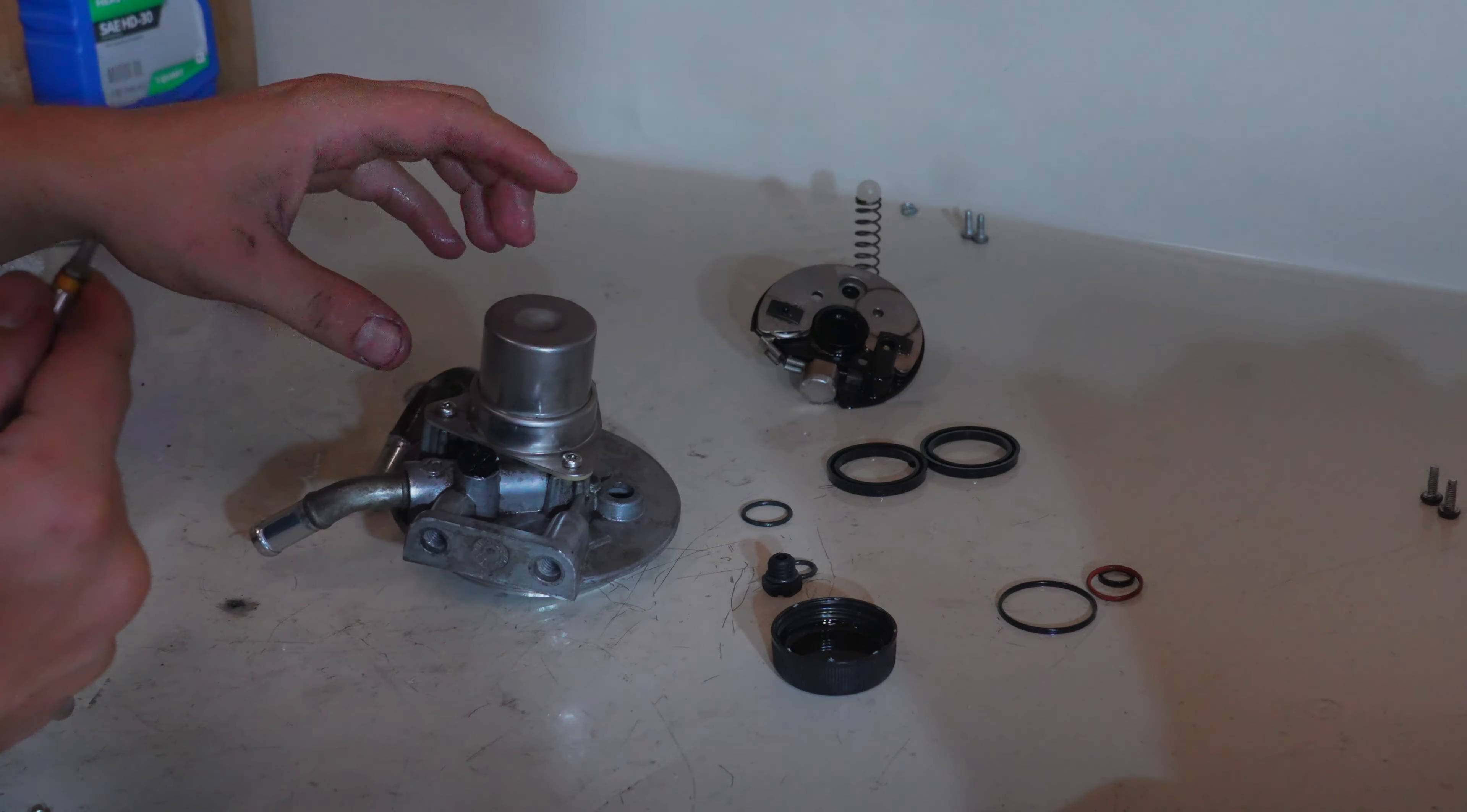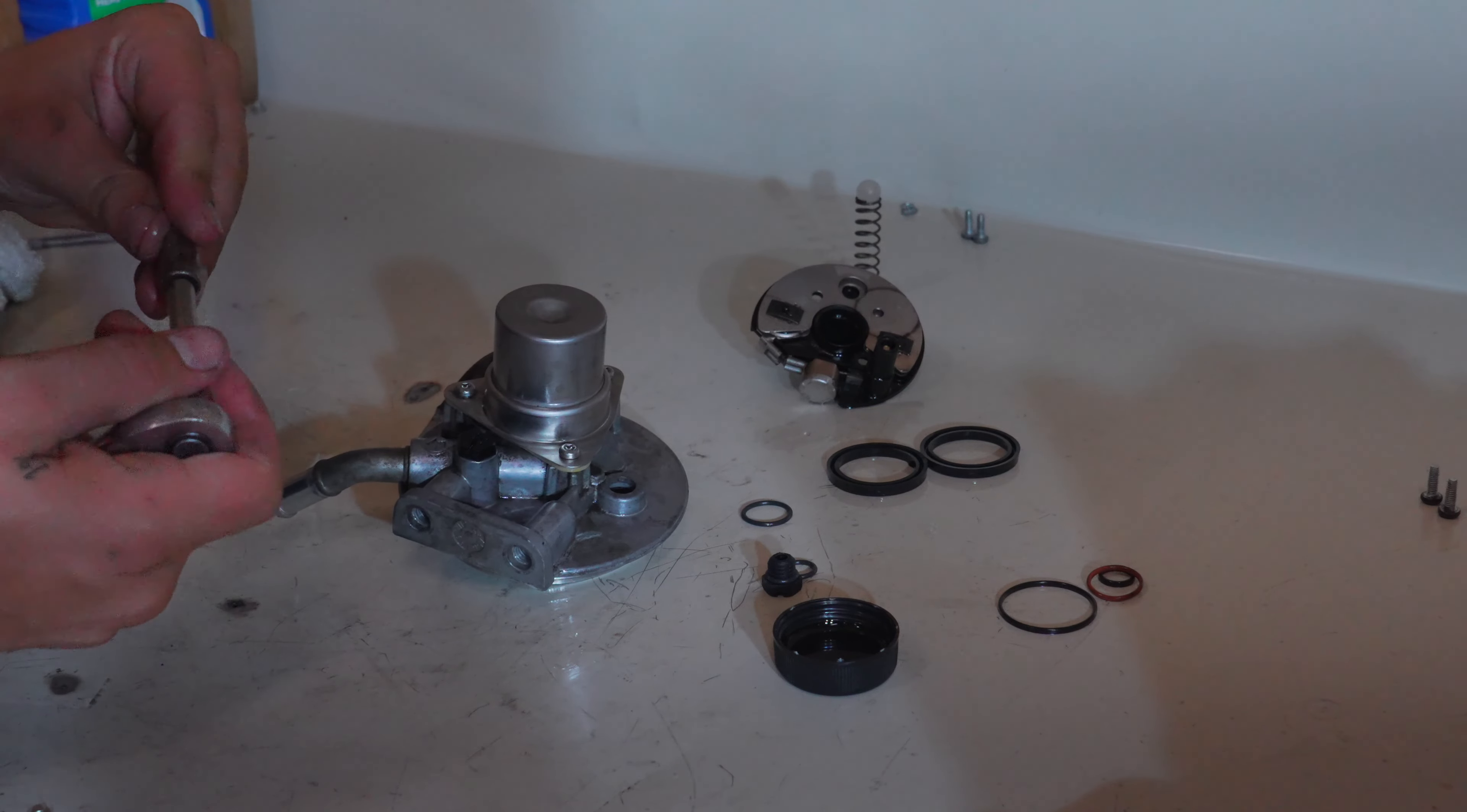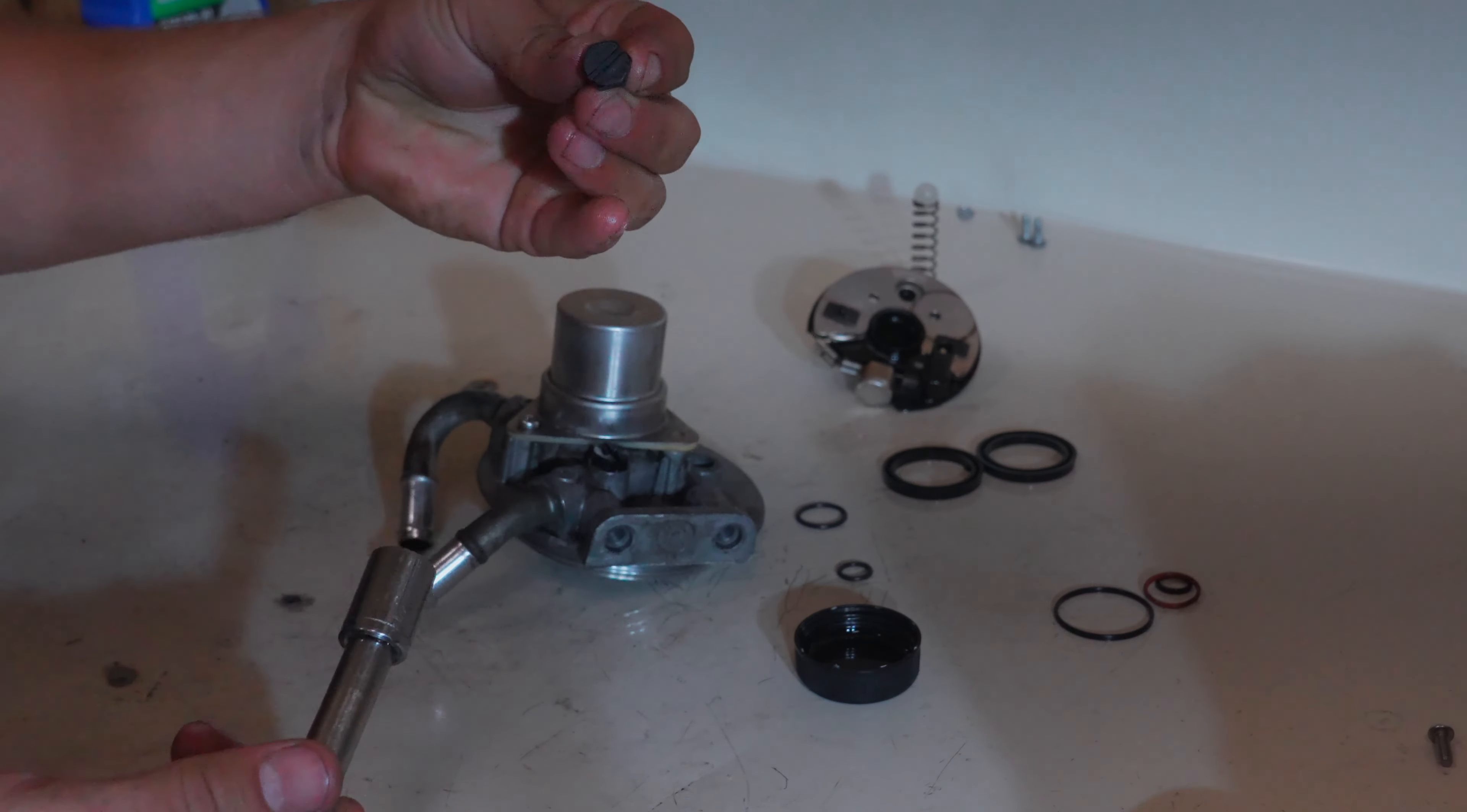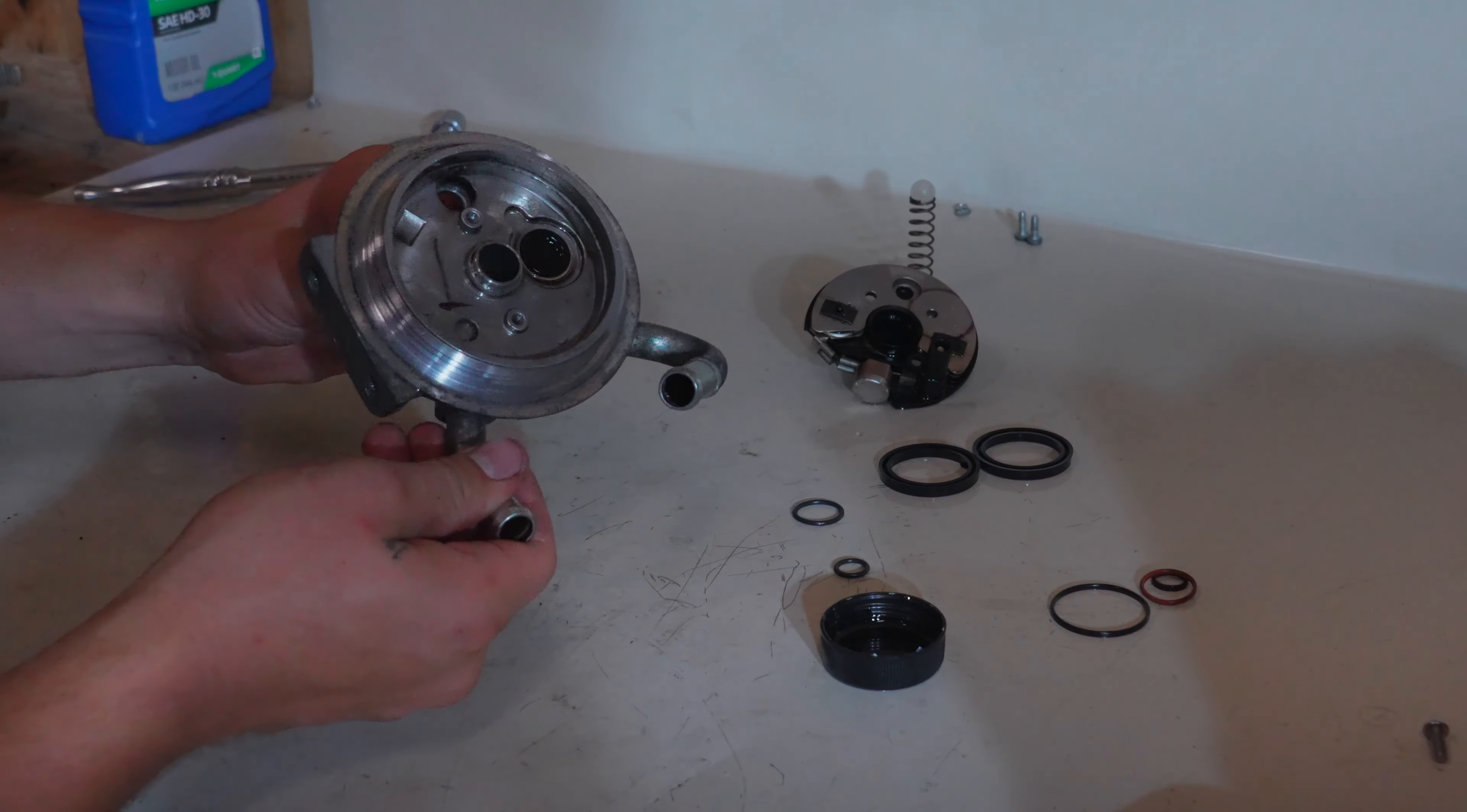And now if we remember correctly, this screw right here we took out on the truck for our electrical connector. So I'm going to go ahead and take this screw back out until we install it back in the truck. All right, so now we're going to use a half inch socket to take out the bleeder screw and install our new bleeder screw.